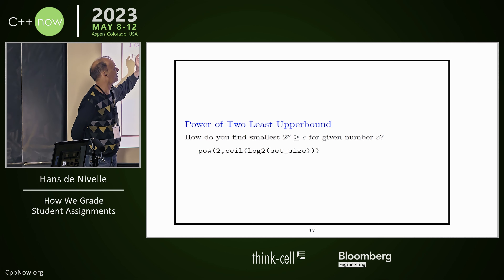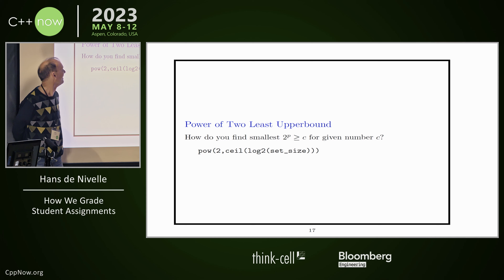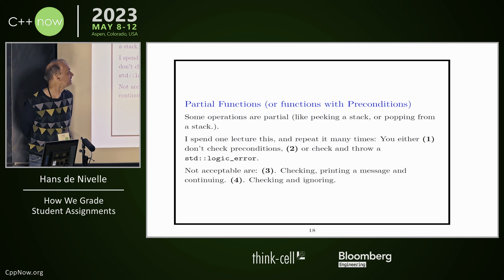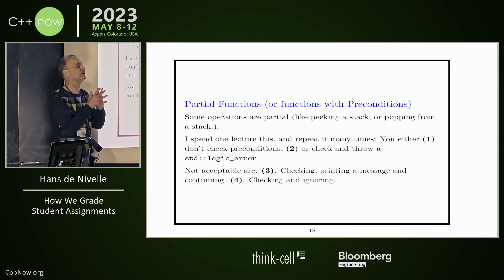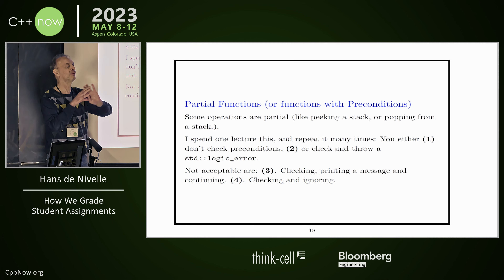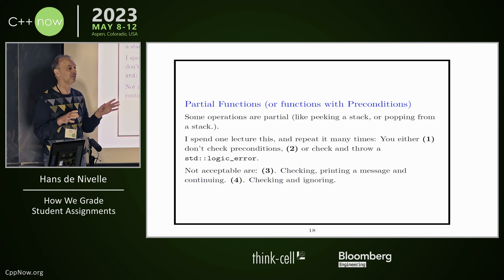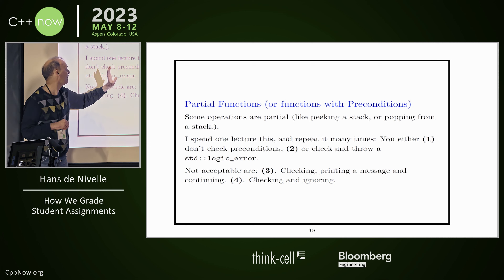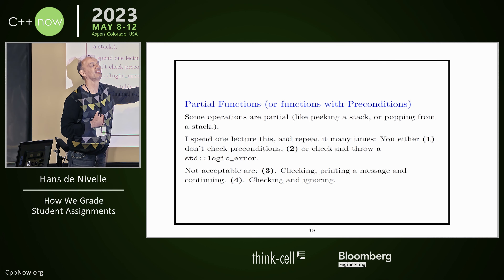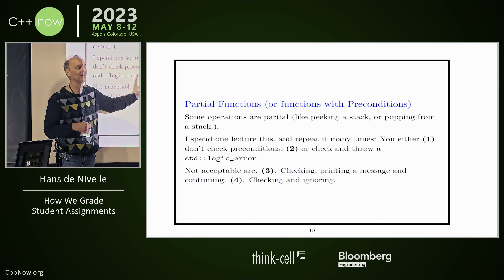How do you find the smallest power of two greater than a given number? Well, like this, of course. Now we come to partial functions. I tell students: if you have a partial function with a precondition, it's often reasonable to just assume the condition is fulfilled and ignore it. You can also check it and terminate your program or throw a logic error. But what is not acceptable is to check it, print a message, and then continue. What is also not acceptable is to check it and ignore it — but students will do it.